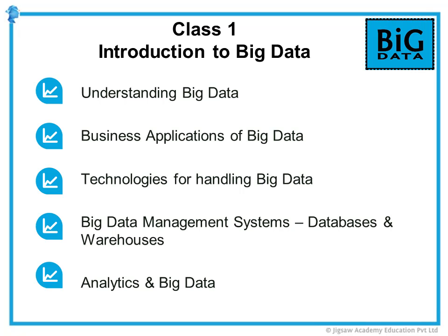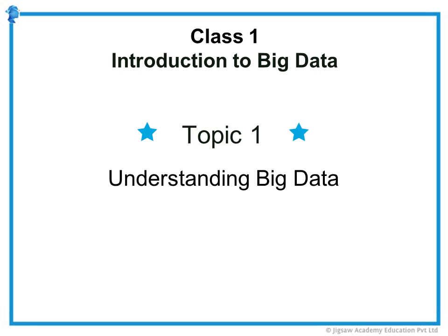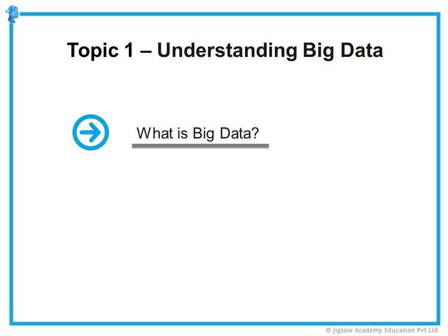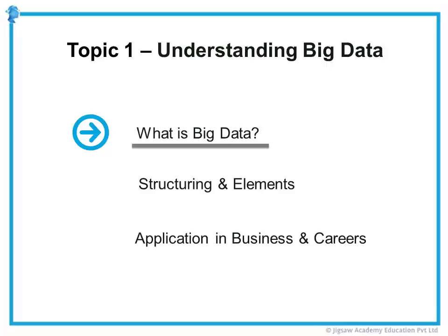We'll understand this in a lot more detail as we explore these topics. The first topic we will discuss today is what is Big Data, what are its advantages and sources. We will be dividing Class 1 into three broad categories: the first is the history and evolution of Big Data; the second is the structuring of Big Data and the elements that comprise it; and lastly, we will study the Big Data application in Business Analytics and the career opportunities associated with studying Big Data.